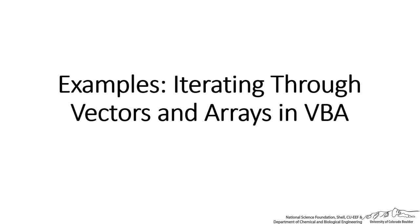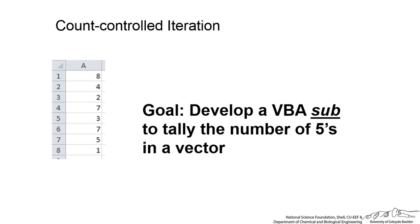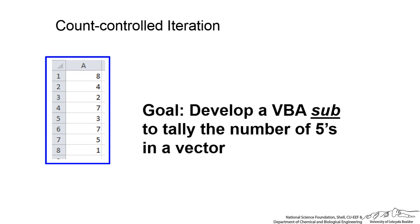In this screencast we are going to go through a couple of examples of iterating through vectors and arrays using for-next loops in VBA. The first example uses a count-controlled iteration — a for-next loop — to develop a VBA sub that tallies the number of 5's in a vector. For example, given a vector, it should display a message box saying there is one 5 in your vector.